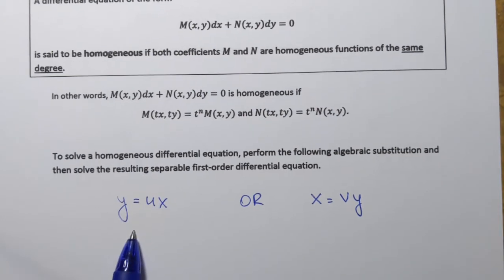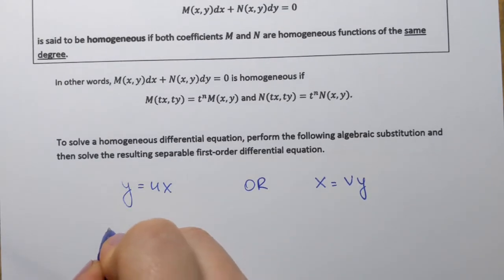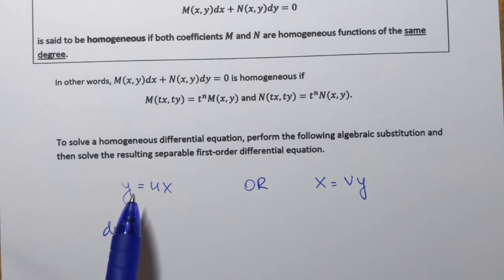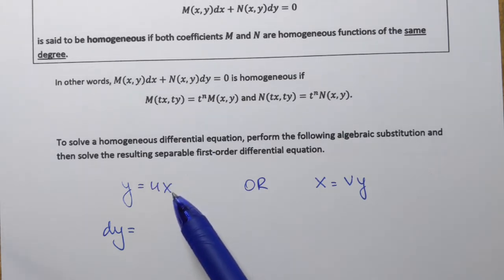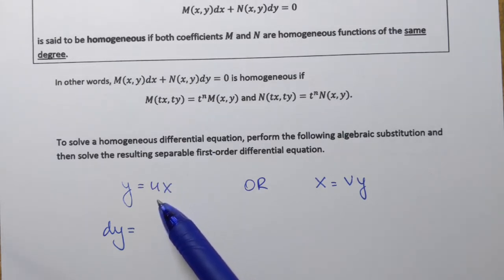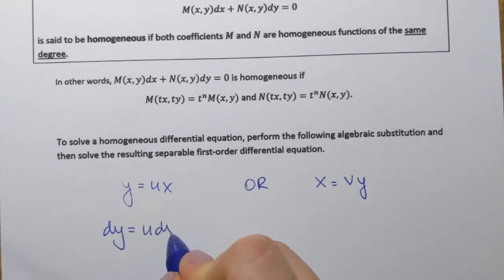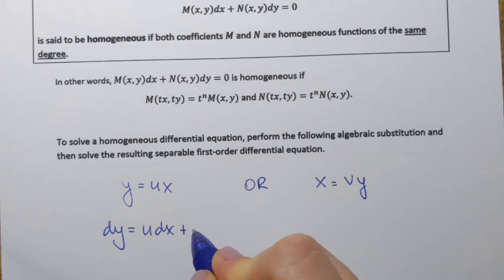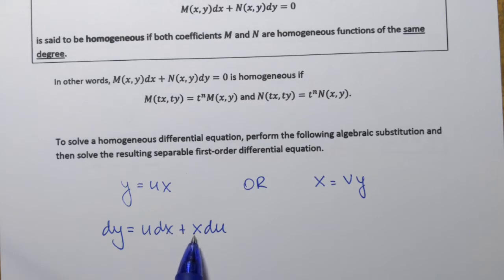If we go with the first case and replace y with ux, then differential dy has to be replaced with something. Well, if y equals ux, to find dy we just take the derivative of the right-hand side — it's a product. According to the product rule, it's going to be the first factor times the derivative of the second, plus the second factor times the derivative of the first. So dy equals u dx plus x du. That's what we replace dy with.